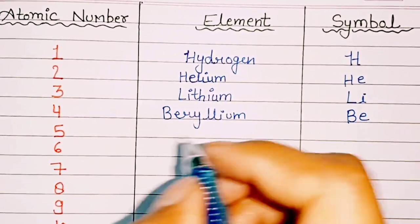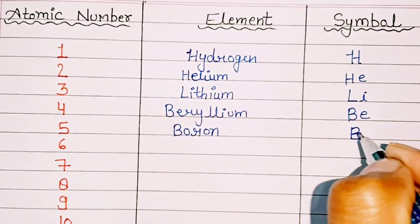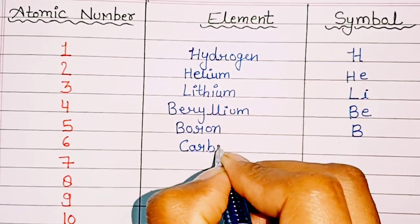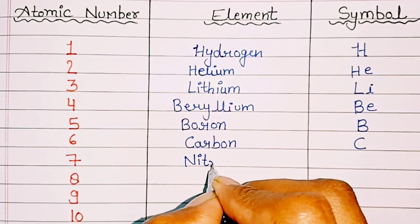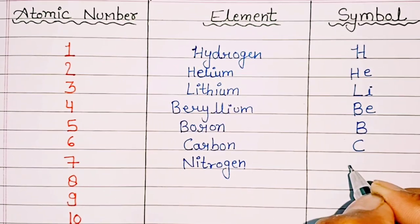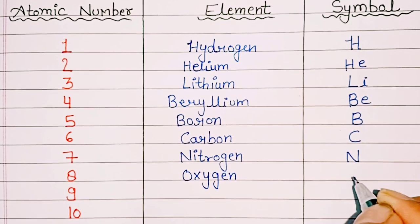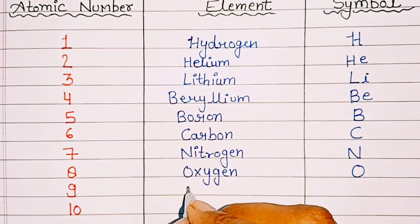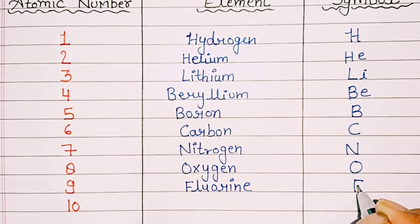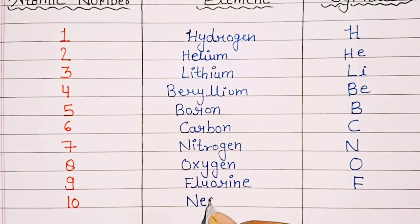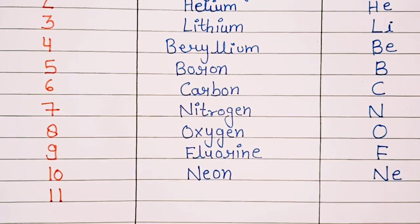4: Beryllium, symbol Be. 5: Boron, symbol B. 6: Carbon, symbol C. 7: Nitrogen, symbol N. 8: Oxygen, symbol O. 9: Fluorine, symbol F. 10: Neon, symbol Ne.